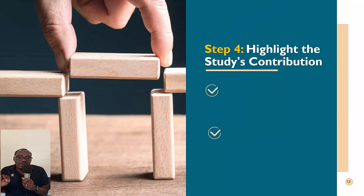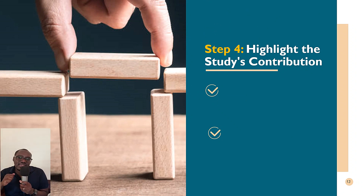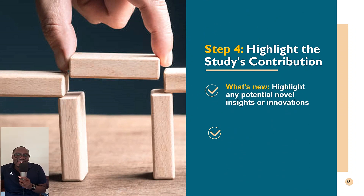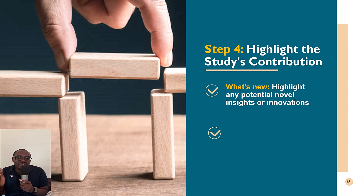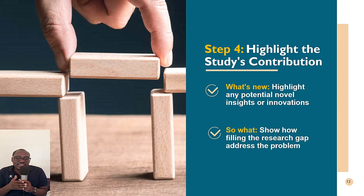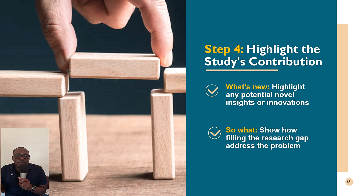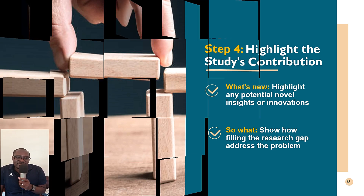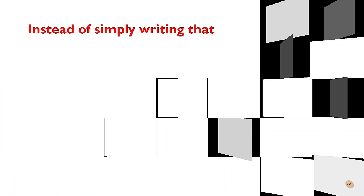Step number four: highlight the contribution of the study. Instead of simply stating the study aim, try to identify any novel results that are going to arise from your results and anticipate those in your aim. Also, show how addressing the research gap is going to solve the research problem that your proposal is trying to address. Let's look at an example.